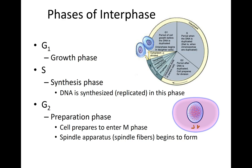The phases of interphase are G1 (GAP1), S (synthesis), and G2 (GAP2), in that order. In G1, the cell is growing — it's the longest stage of the cell cycle — and doing its normal functions, like transporting oxygen and carbon dioxide if it's a blood cell, or contracting if it's a muscle cell. In the S (synthesis) phase, we're making a copy of DNA, so at the end of S phase we have two complete sets of DNA. Then G2 is preparation: the cell is preparing to enter mitosis, and the spindle fibers begin to form.